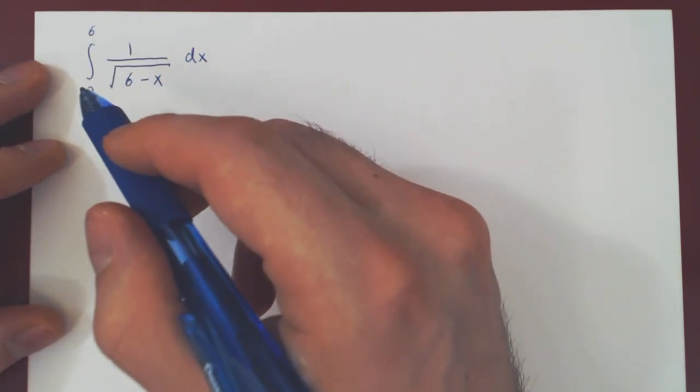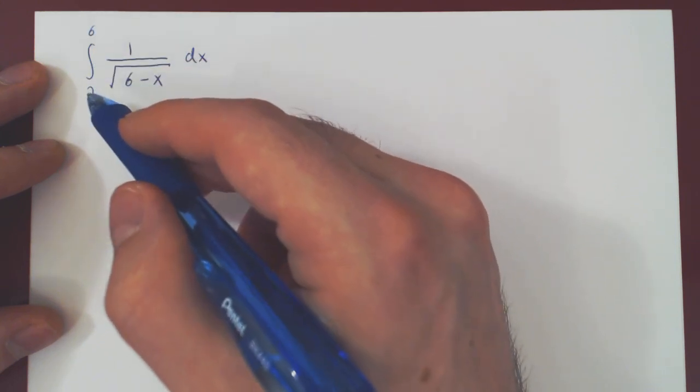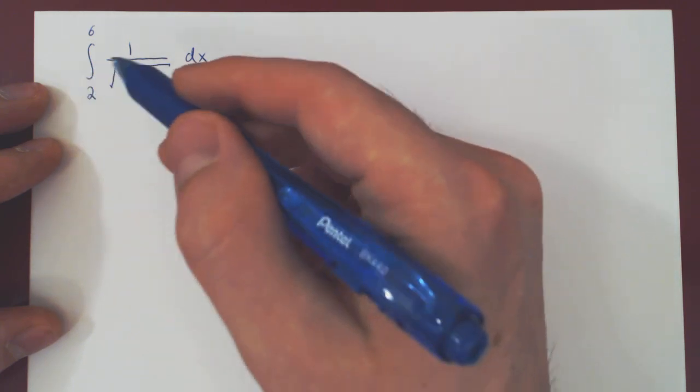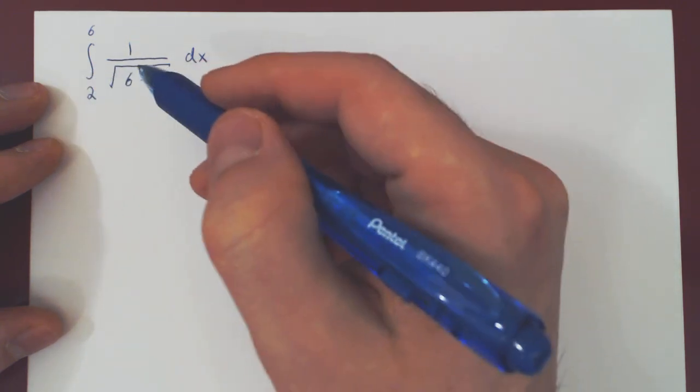Now clearly this is not an improper integral of type 1, as both bounds of integration are finite. So if this is to be an improper integral, it must be of type 2.